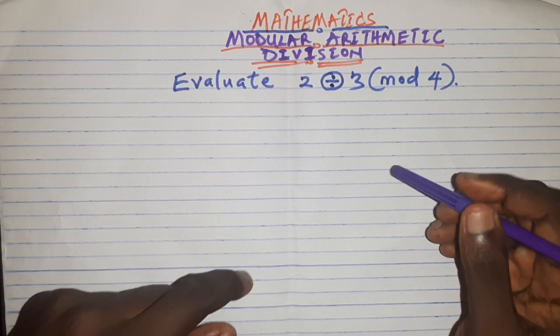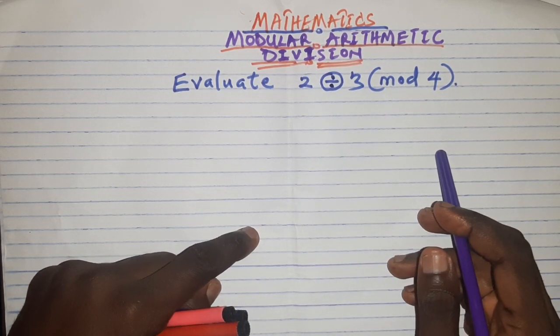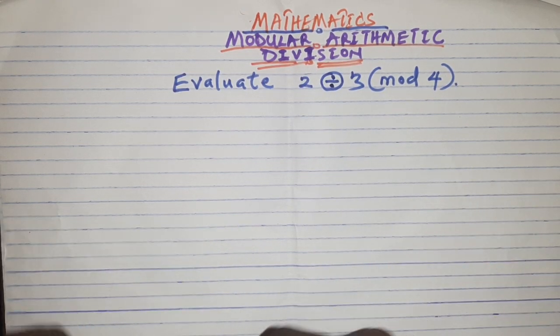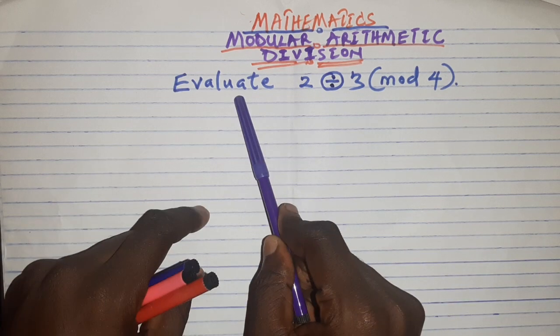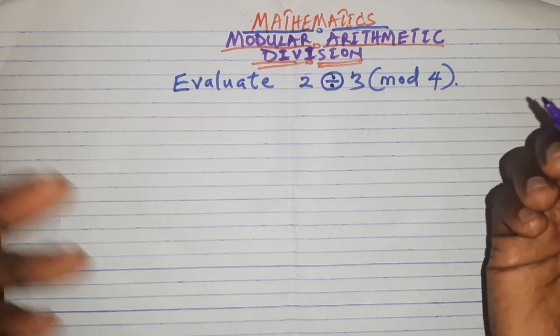Okay, so let's look at modular arithmetic and division. Division in modular arithmetic is interesting. Let's look at this example: evaluate 2 divided by 3 in mod 4, so you write it this way.